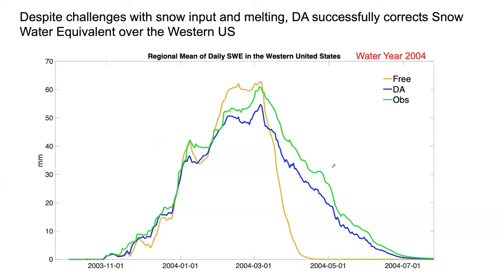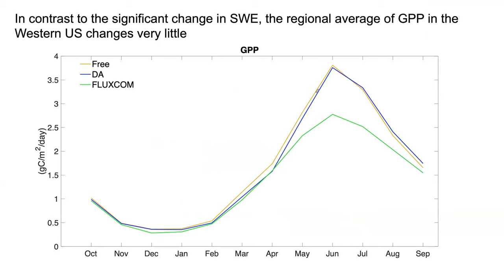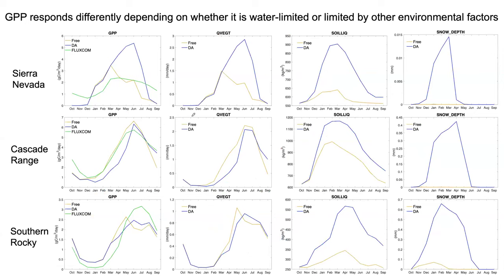If you look at the time series of SWE in the western United States, we can keep this SWE up until after July 1st. In terms of what that means for gross primary productivity, if you look at the time series we don't see very clear changes in GPP, but if you look at the spatial maps, in regions where it's water-limited we do see a GPP surge. Snow can also change the snow albedo and fraction, which affects temperature and might change GPP too.